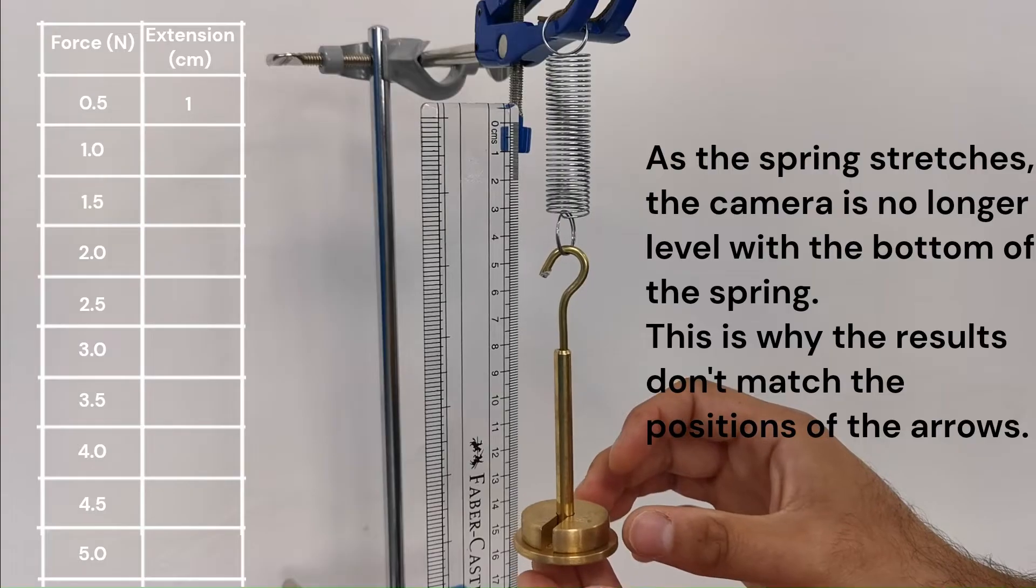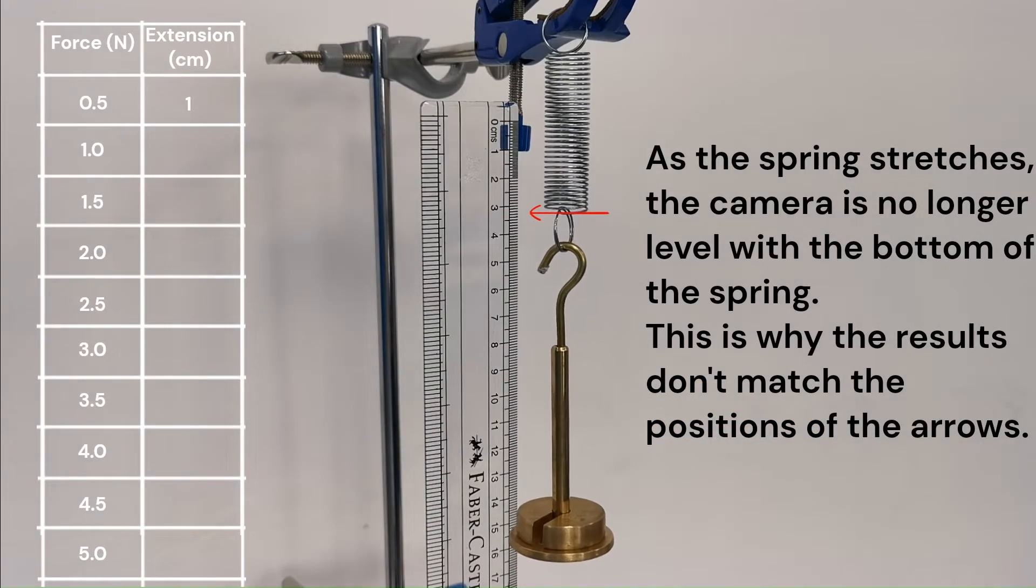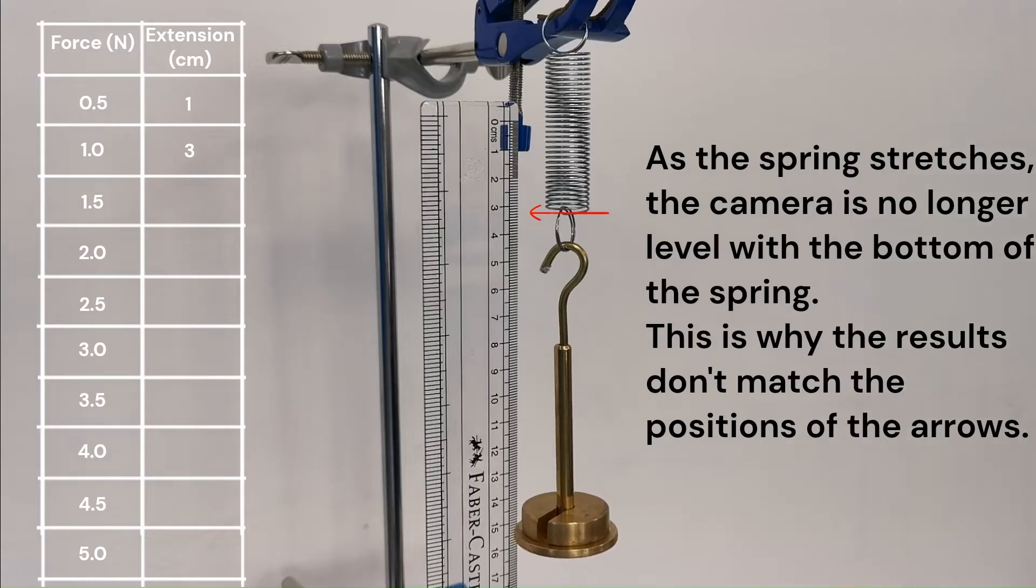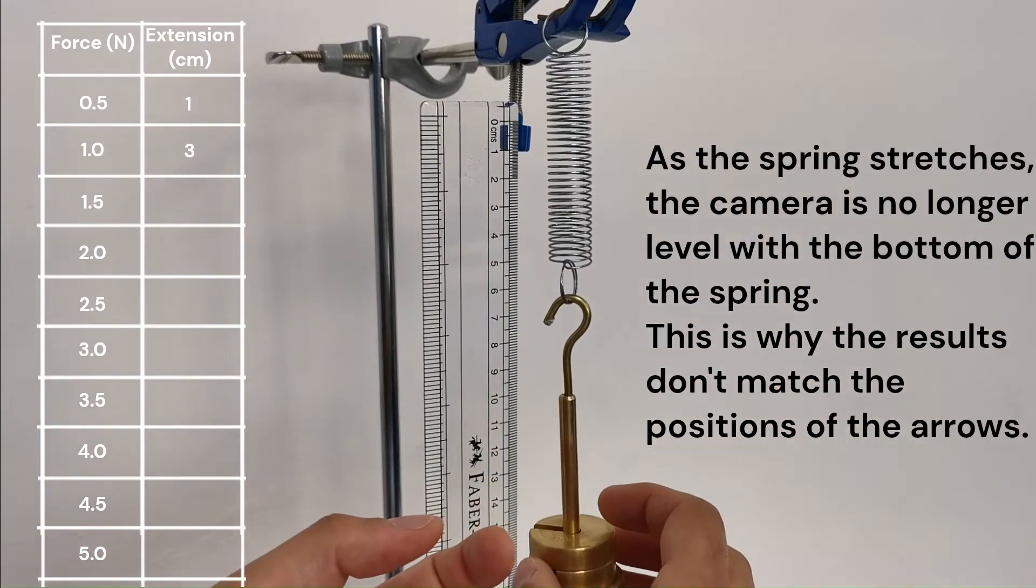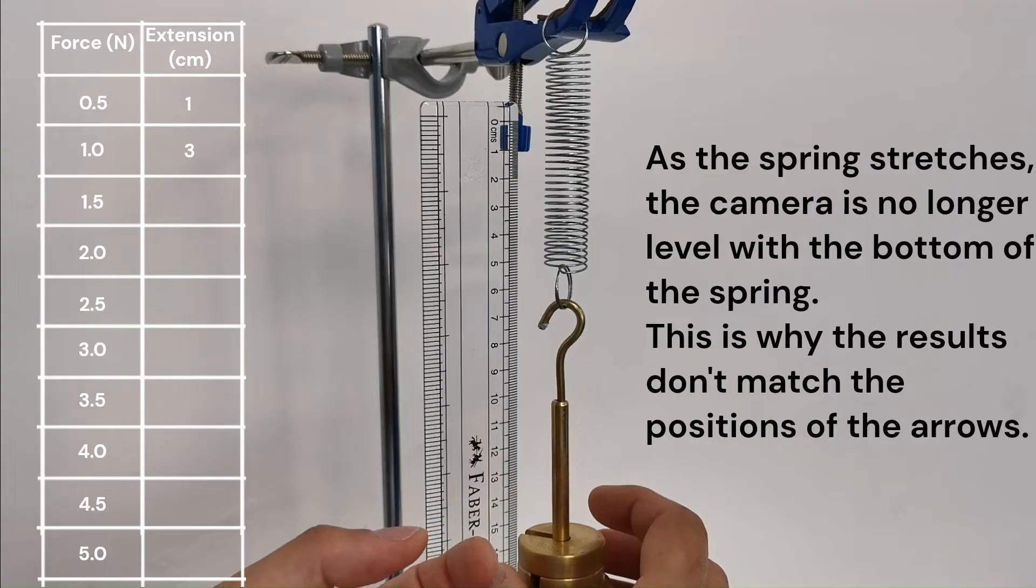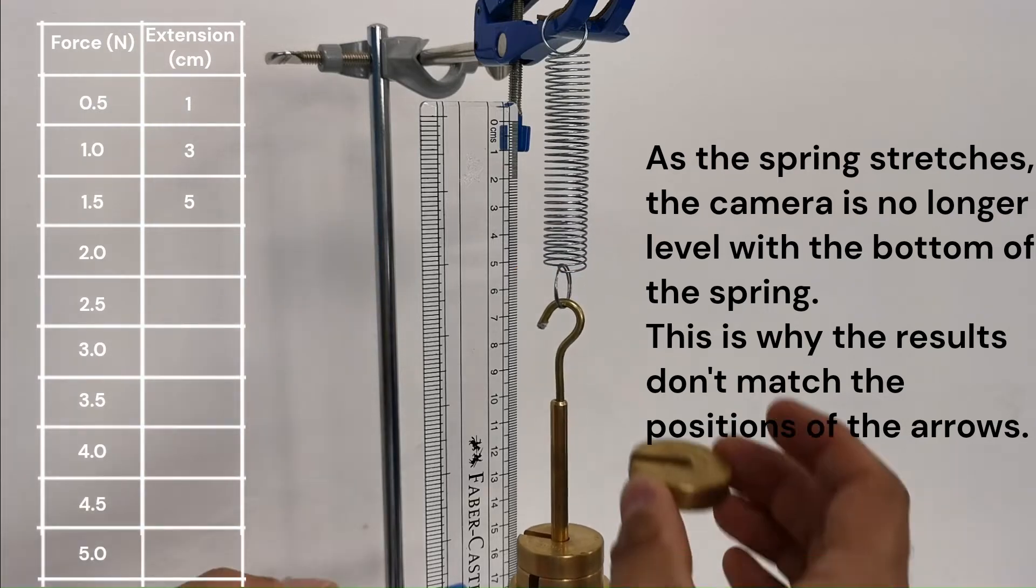Notice that the results differ from the position of the arrow on the screen. This is an example of a parallax error. This occurs when the position of the observer's eye is not directly level with the point of measurement, which in our case is the bottom of the spring coil. When your eye is not level with the bottom of the spring coil, you might read the ruler at an angle. This can cause you to record the wrong extension value because the apparent position of the bottom of the spring coil changes depending on your viewing angle.